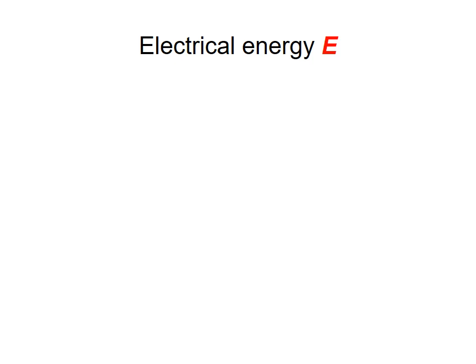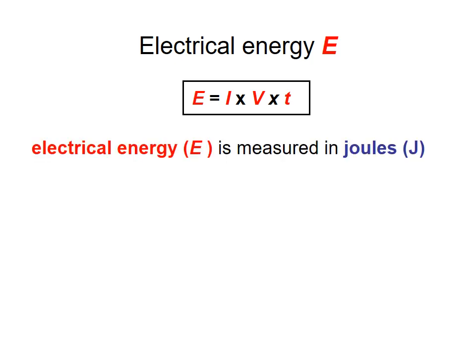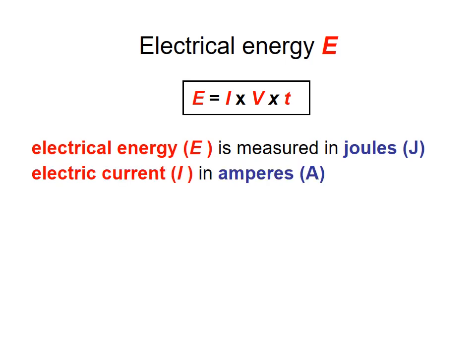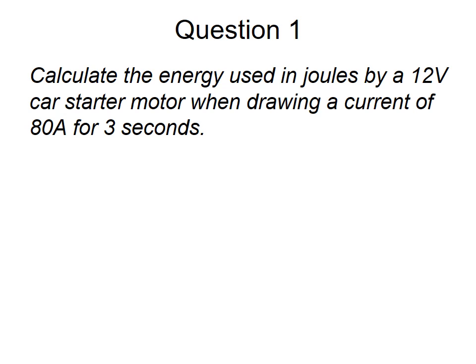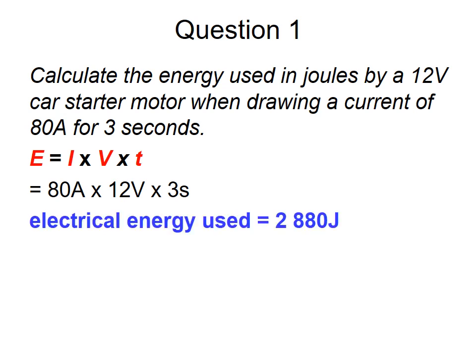Now let's look at electrical energy, E. The equation is E equals I times V times T, where E is electrical energy in joules, I is current in amps, V is voltage in volts, and T is time in seconds. Question 1: Calculate the energy used by a 12-volt car starter motor drawing 80 amps for 3 seconds. E equals 80 times 12 times 3 equals 2880 joules.